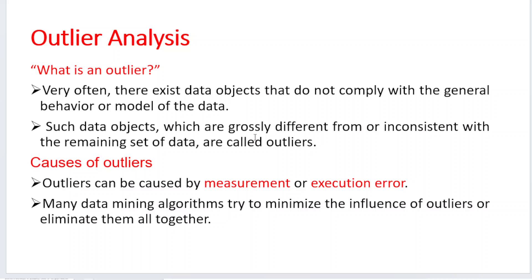First, what is meant by an outlier? Any data point which behaves in an abnormal manner — not in the normal way — will be considered as an outlier. Such objects which are grossly different from each and every other data point, or inconsistent with the remaining set of data points, are called outliers.